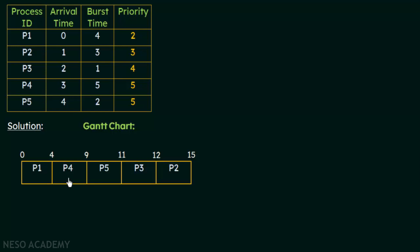After P4 releases the CPU at 9 milliseconds, P5 gets it next, because P5 also had the same priority but P4 arrived earlier. P5 will execute for 2 milliseconds, so from 9 to 11 milliseconds, P5 uses the CPU for its execution. Now P1, P4, and P5 have completed. The remaining processes are P2 and P3. Among P2 and P3, P3 has a priority of 4, which is higher than P2's priority of 3. So P3 will be the next one to get the CPU when P5 releases it.